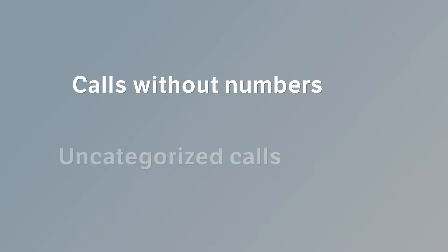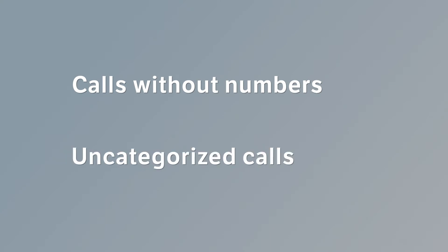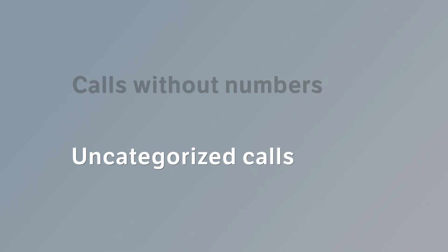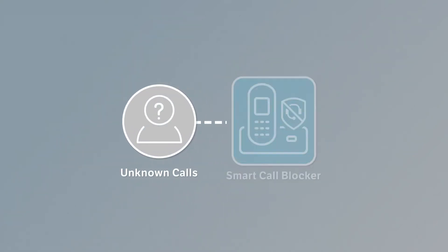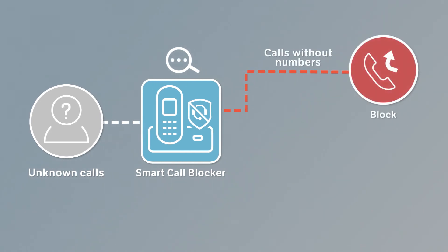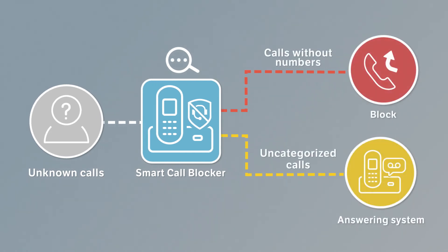Unknown calls are divided into calls without numbers and uncategorized calls. Calls without numbers are calls without caller ID, and uncategorized calls are calls with numbers that cannot be found in your welcome caller and unwelcome caller lists. With this setup, Smart Call Blocker blocks all calls without numbers and forwards uncategorized calls to the answering system.